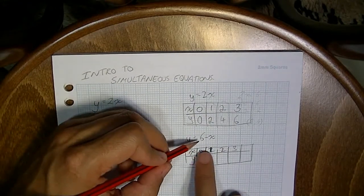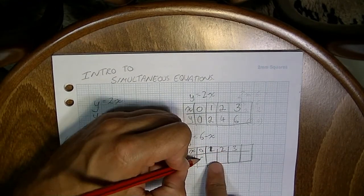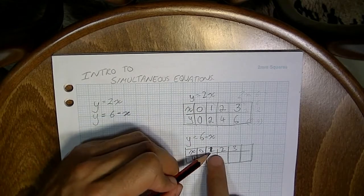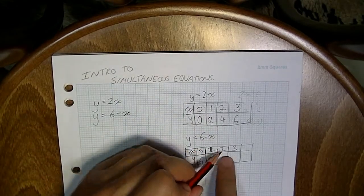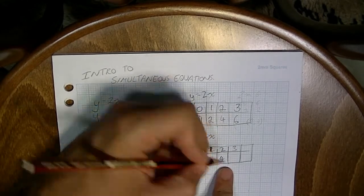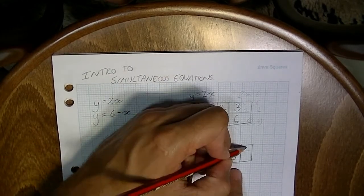Now, 6 minus 0, that's going to be 6. 6 minus 1, that's going to be 5. 6 minus 2, that's going to be 4. 6, 5, 4. It's going to continue in that pattern.